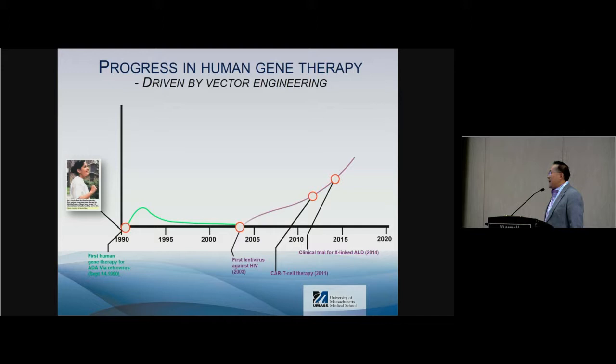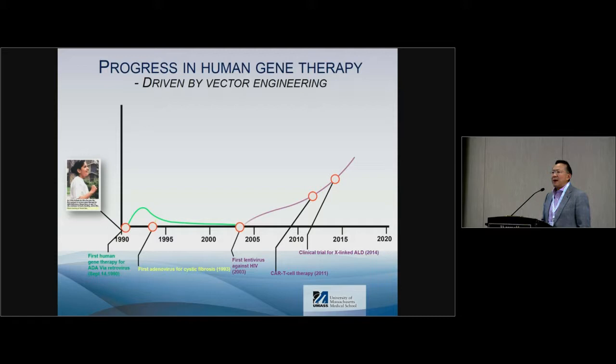In the early 90s, an important virus emerged: adenovirus. This is probably the most efficient gene transfer vector we have tested. Unfortunately, this virus comes with a price. Gene therapy volunteer Jesse Gelsinger passed away because of innate immunity and a cytokine storm in September 1999. After that, the field, as well as adenovirus use, gradually declined.